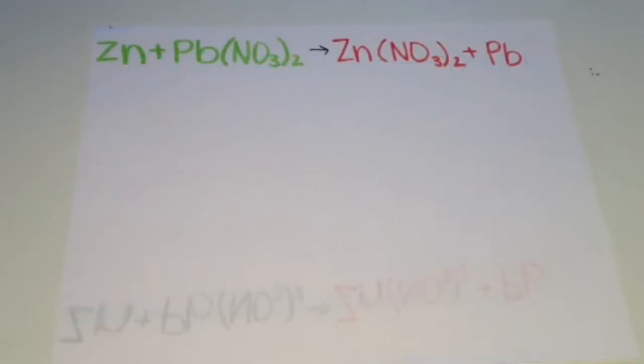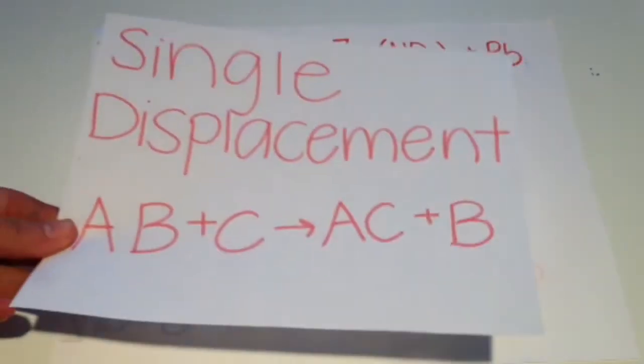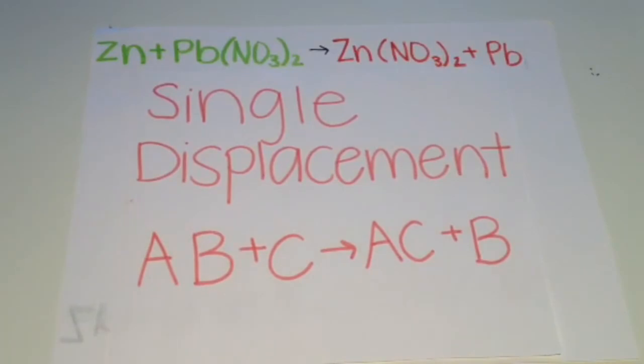Now that we know that our equation is balanced, it's time to classify it as single displacement. This can be written as AB plus C yields AC plus B. You can see that with our equation up above.